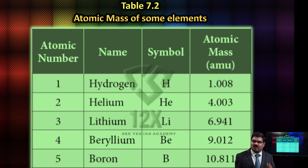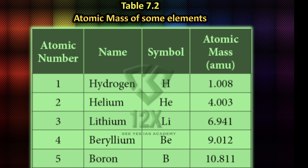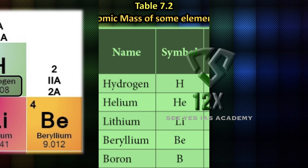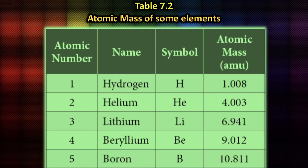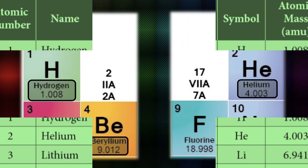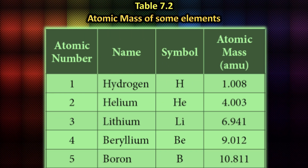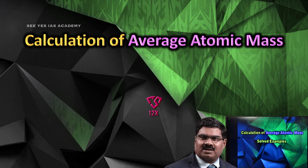Table 7.2 contains the first session elements: hydrogen, helium, lithium, beryllium, boron — showing the average atomic mass of some elements.